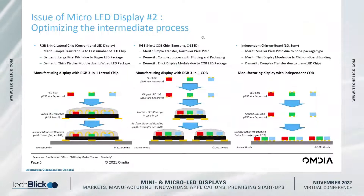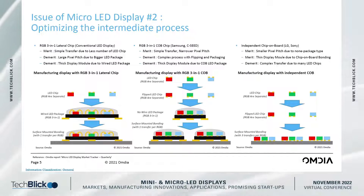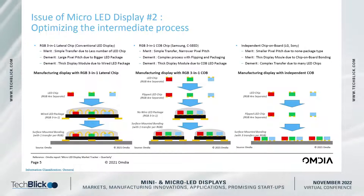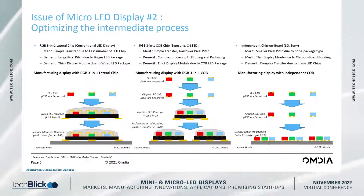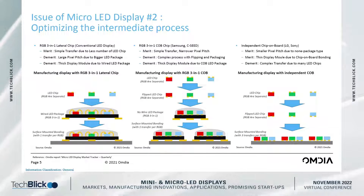There is another issue after making micro LED chips: how to achieve full color. Traditionally, to make a full color display, traditional LED signage companies usually use a one-chip solution with three different LED colors packaged together. But this packaging requires additional pads, which are marked in yellow.